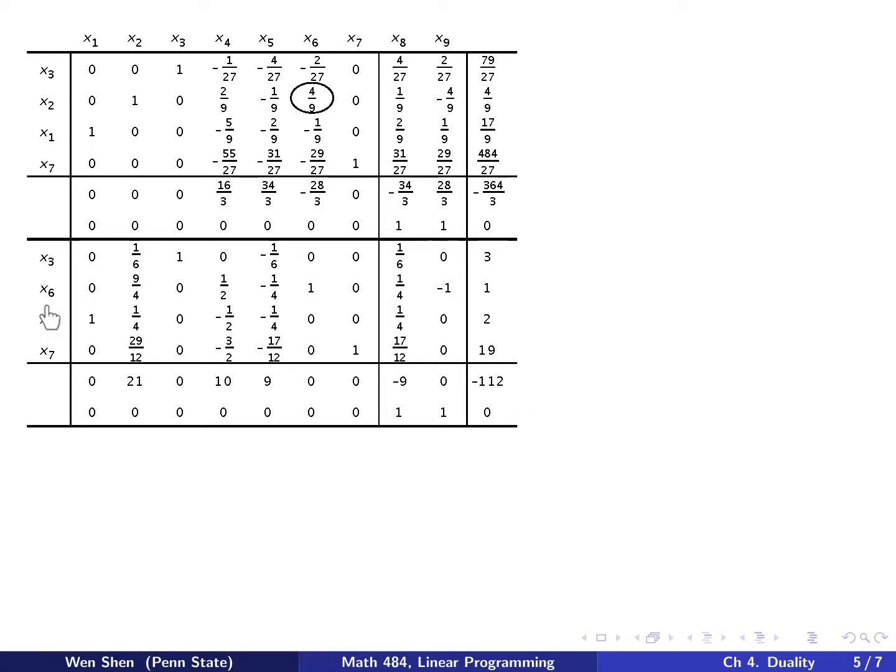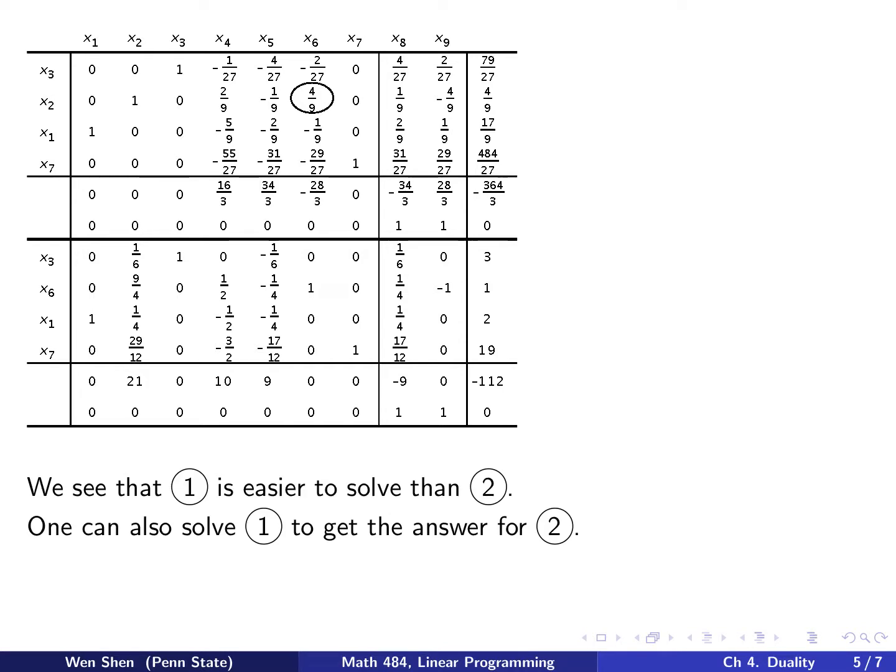That means the minimum is obtained here, and you can conclude the basic solutions by looking at the right-hand side and assigning them to the basic variables. We see that the minimum is 112. If you recall for the original problem, the max is also 112, and this is obtained at x3 is 3, x6 is 1, x1 is 2, and x7 is 19. This confirms the duality theorem. We have this result as predicted by the theorem.